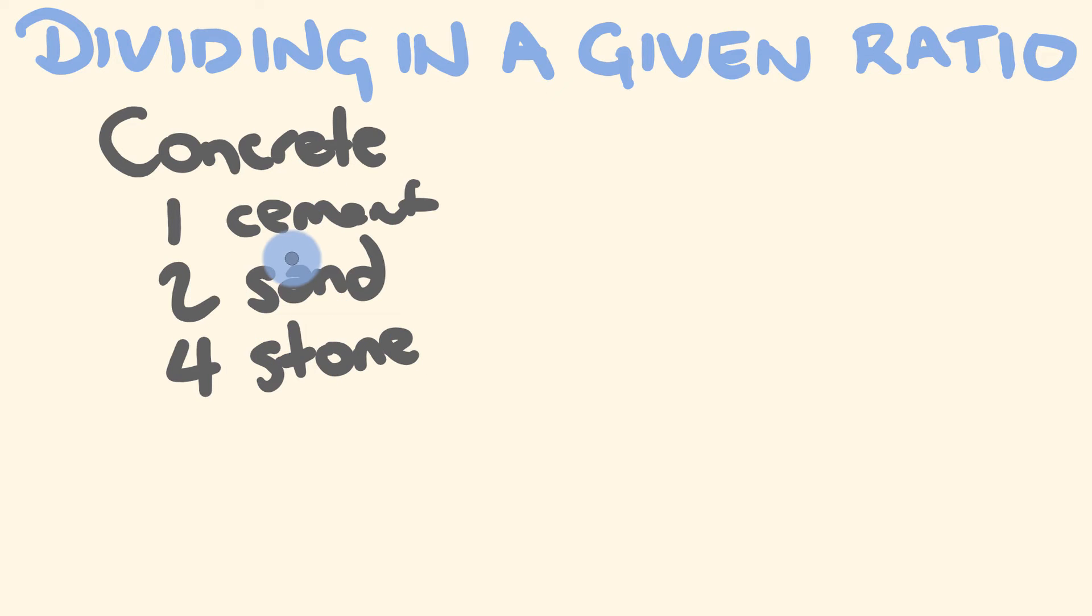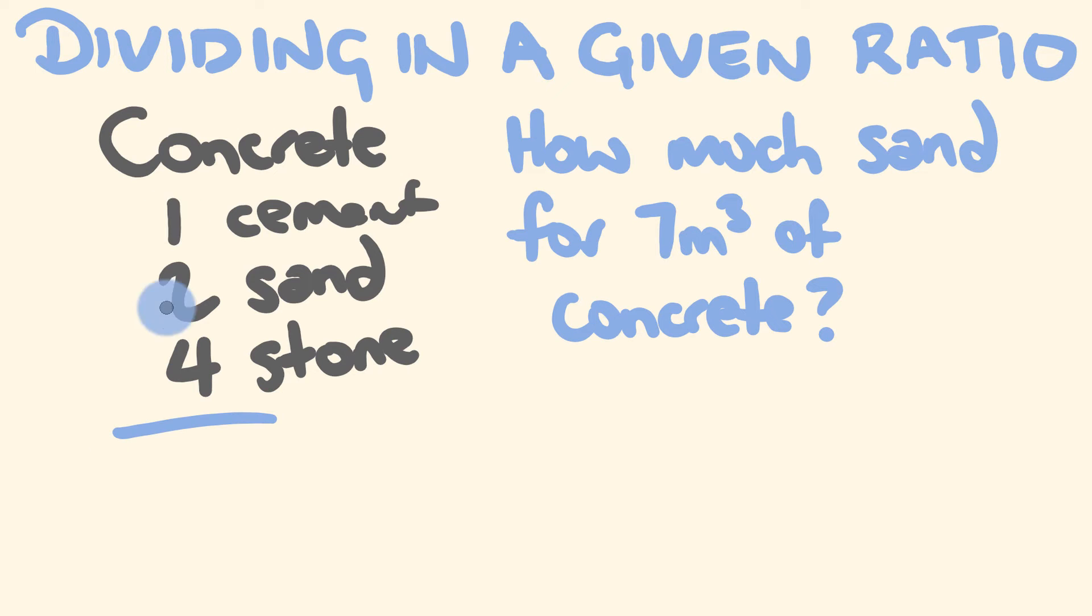So let's answer a few questions about this. The first thing I'm going to ask is, how much sand do we need for 7 metres cubed of concrete? So the way that we'd work this out is as follows. We have one part cement, two part sand, four part stone. And this ratio of 1:2:4. So altogether, we have 7 parts in total.